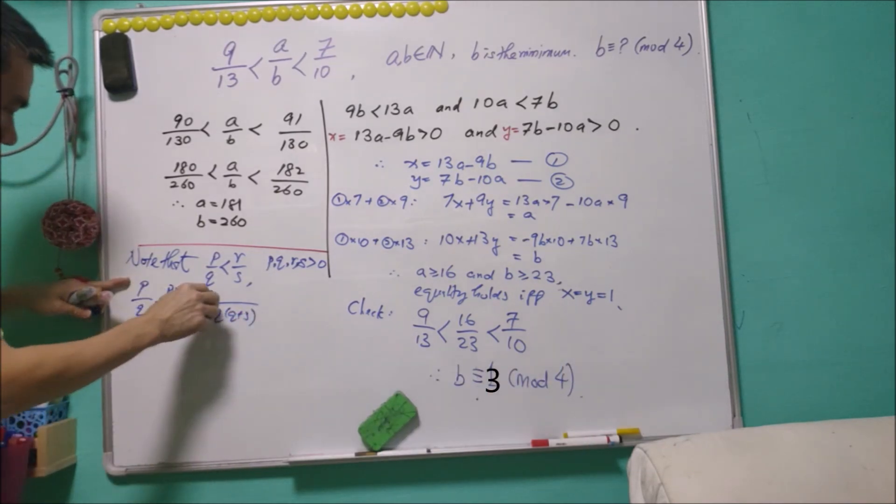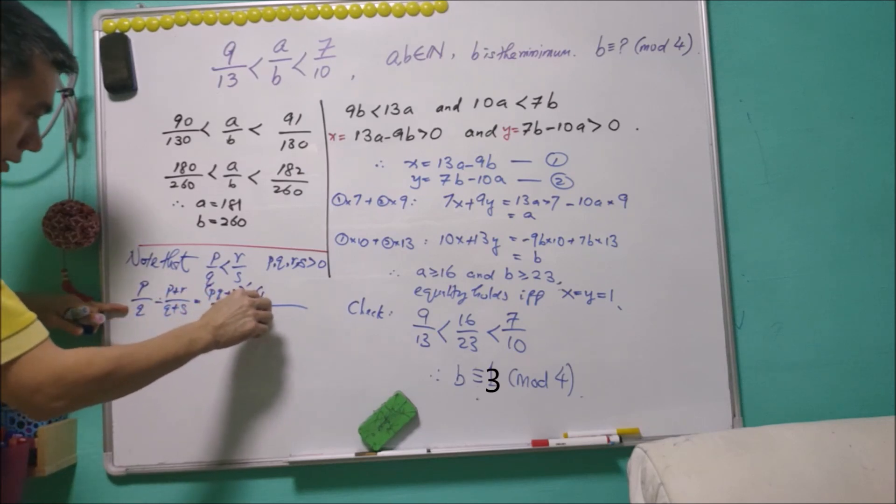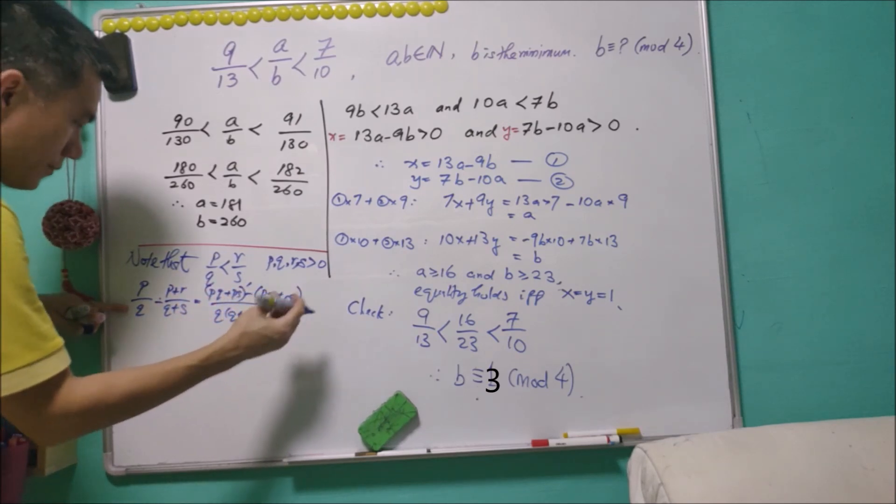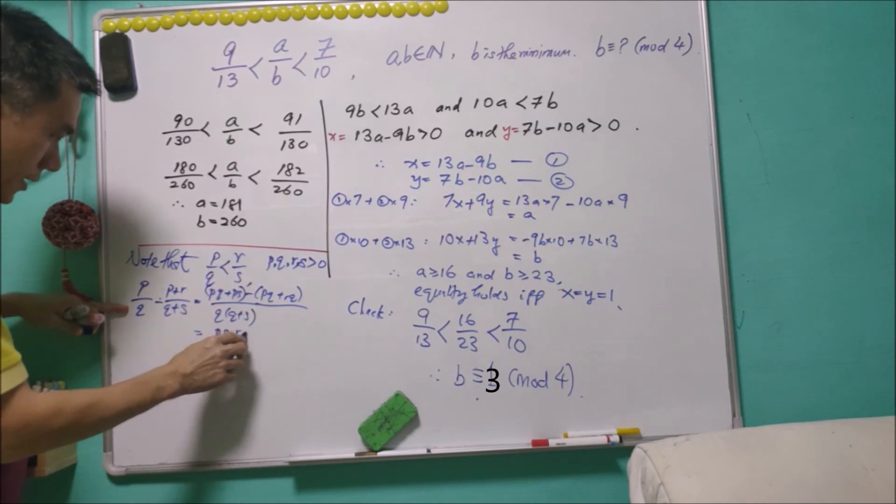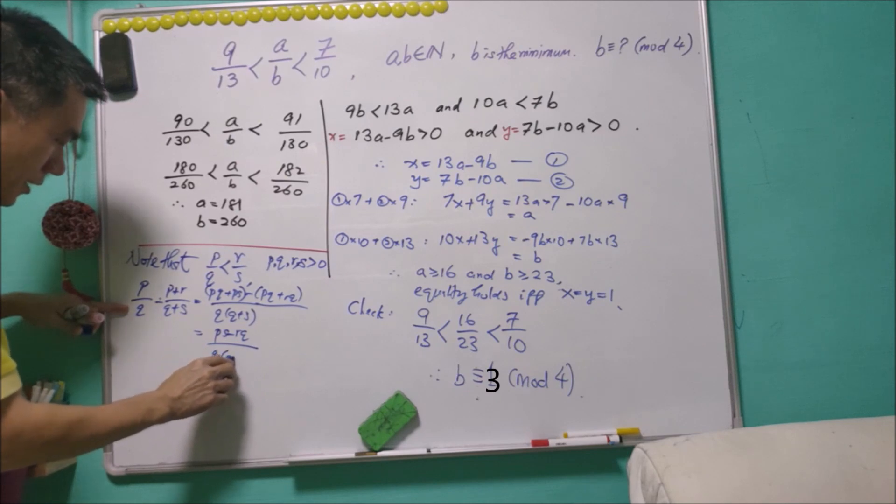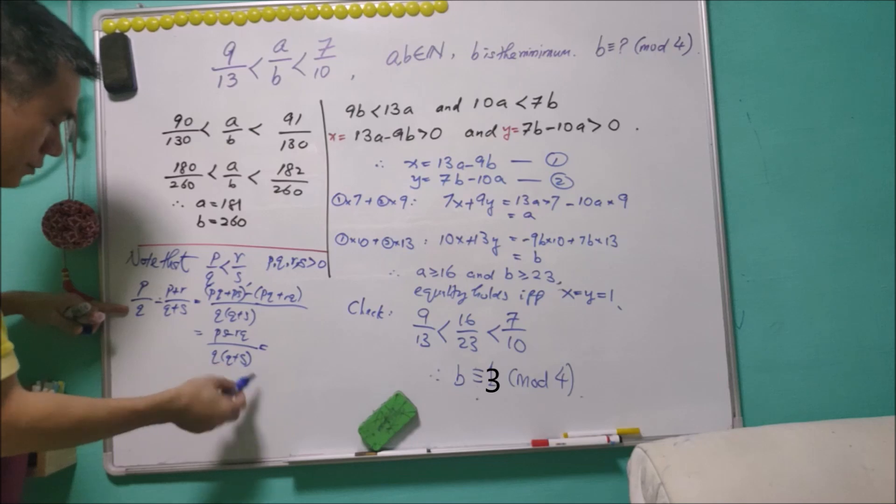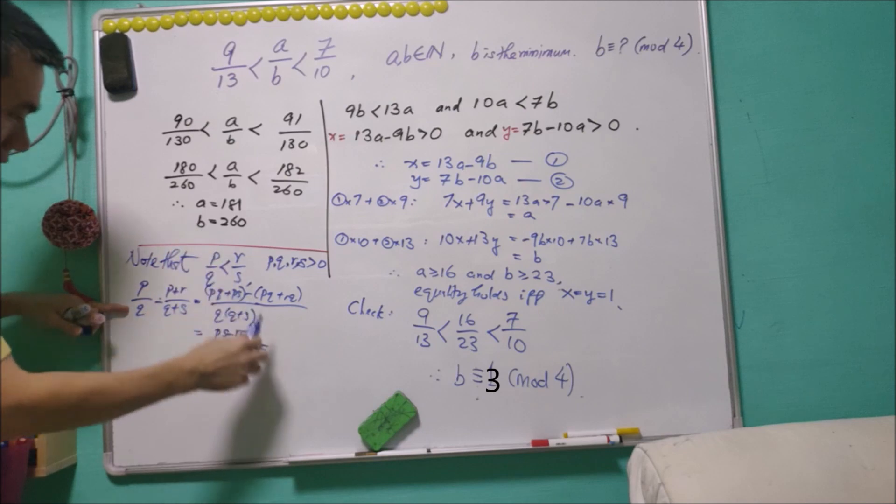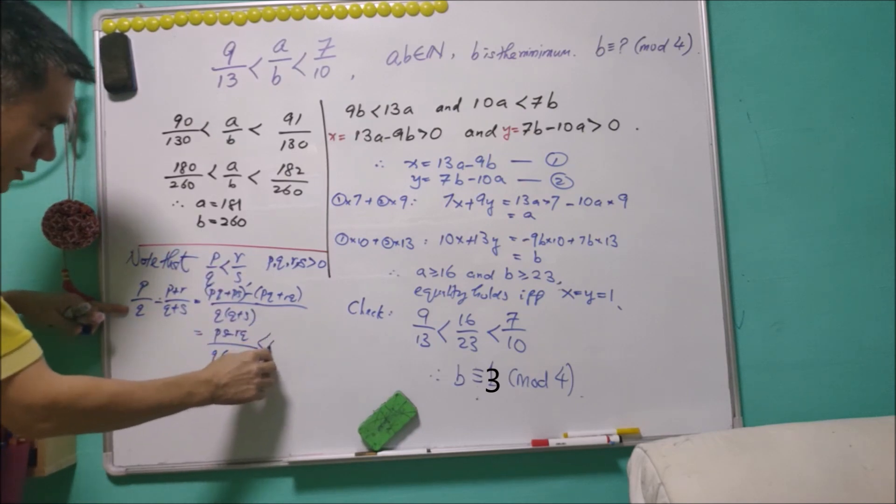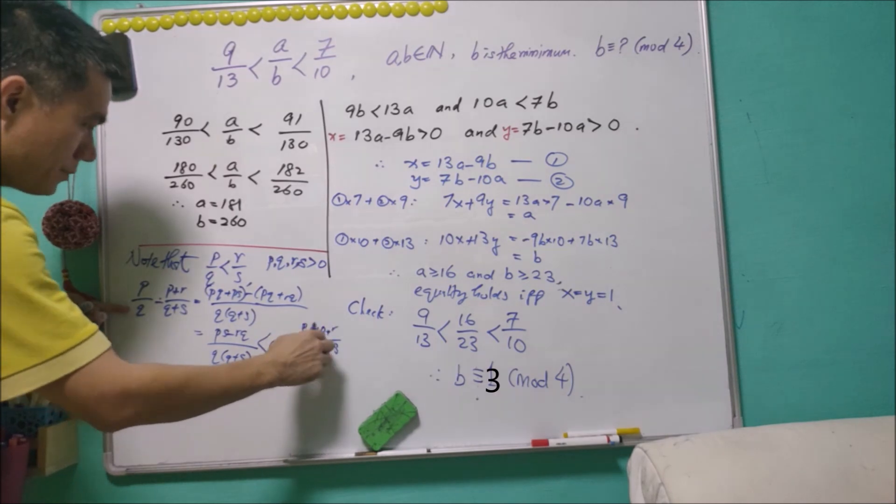Then we will see that (p+r)/(q+s) minus p/q equals (ps - rq)/(q(q+s)). And ps - rq from here will be a negative value, and this will mean that p/q is less than (p+r)/(q+s).